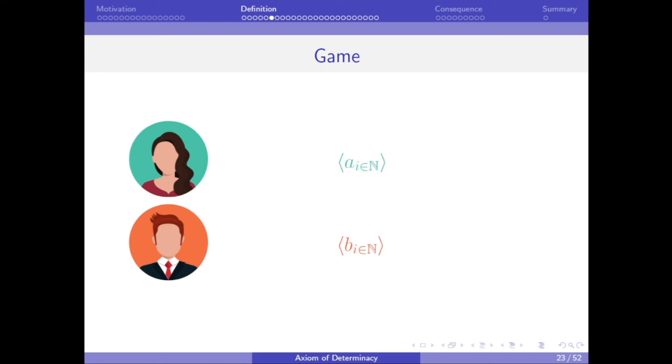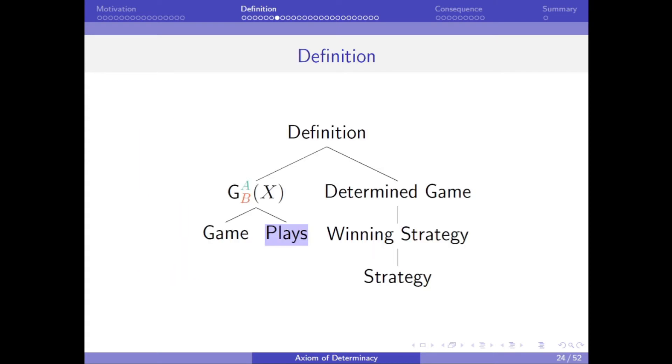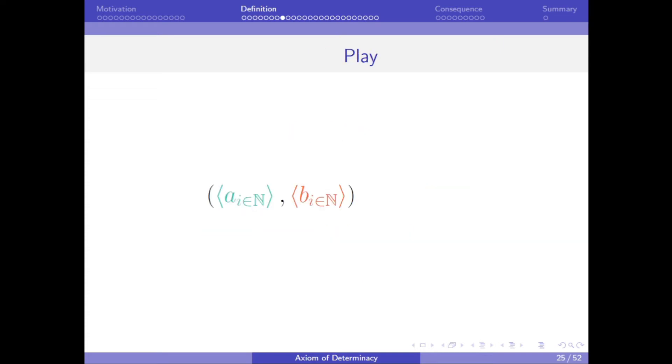So, we will use this shorthand to denote their infinite sequence of moves using angled brackets. And we use these infinite sequences to define plays, where a play is the pair of Alice's and Bob's infinite sequence of moves. And we use A to the omega times B to the omega to represent the set of all plays, where A to the omega and B to the omega represent the set of all countably infinite sequences of elements in A and B, respectively.